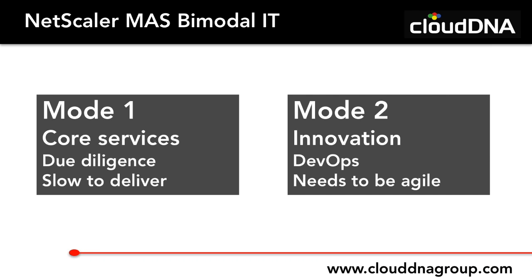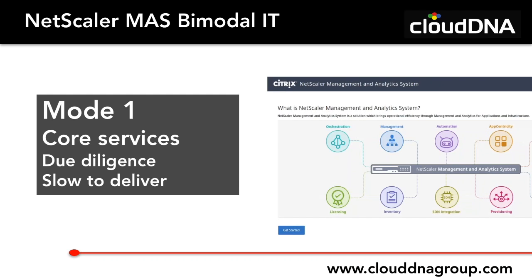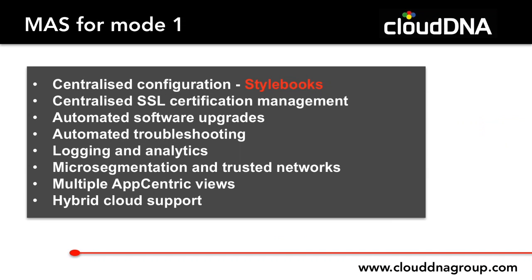These two distinct modes — Mode 1 being traditional IT, Mode 2 being the more agile DevOps environment — have historically required two very distinct methods of operation. Let's look at how NetScaler Management and Analytics System supports both. In Mode 1, there's centralized configuration using style books, created and configured across an inventory of NetScaler instances.